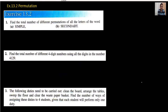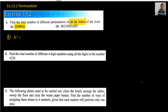Moving to question number 1 of exercise 13.2: find the total number of different permutations of all the letters. All the letters means there is no restriction — we just need to count how many alphabets there are: 1, 2, 3, 4, 5, 6. So we write 6 factorial, which equals 720. You can also write 6 P 6, which gives the same answer.